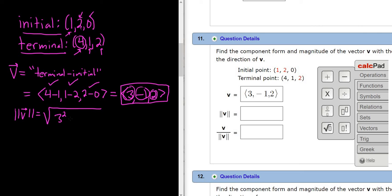So you do 3 squared plus negative 1 squared plus 2 squared. So in general, if you have v equal to <a, b, c>, just so you have the formula in case you want it, you basically just take the square root and it's a squared plus b squared plus c squared. It's just an extension of what we do in two dimensions.